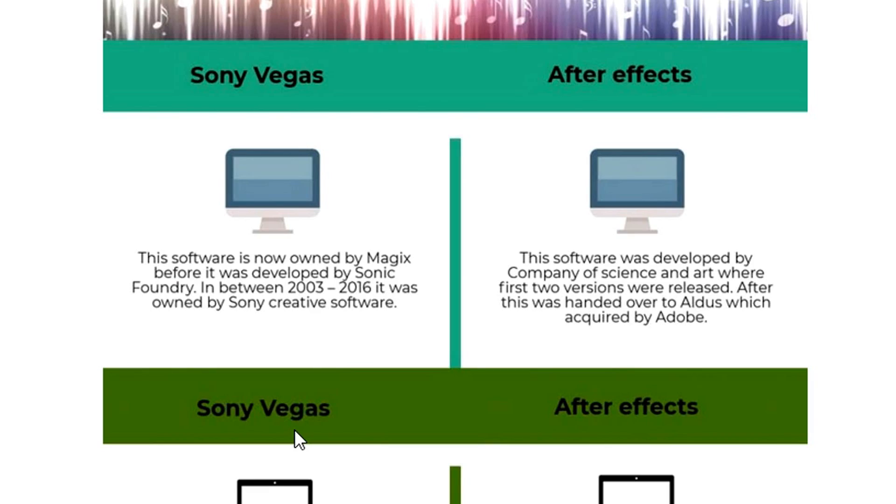It basically all comes down to this: Vegas Pro is not really beginner software anymore. Back in the day it was compared to Windows Movie Maker or iMovie from Apple, but Vegas Pro got way more complex and a lot more advanced, including automatic motion tracking added over the past couple of years and stabilization tools. Sony Vegas is now owned by Magix; before that it was developed by Sonic Foundry, and between 2003 and 2016 it was owned by Sony Creative Software.